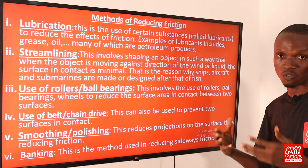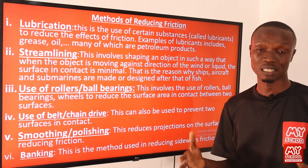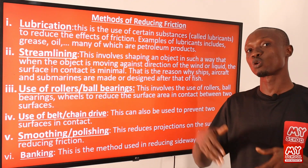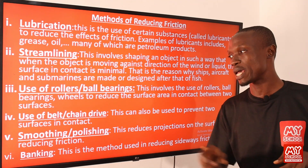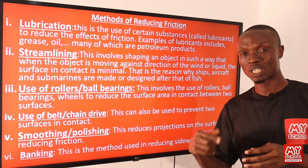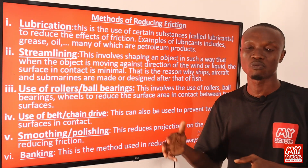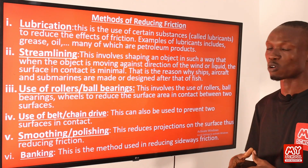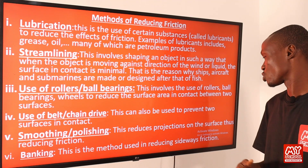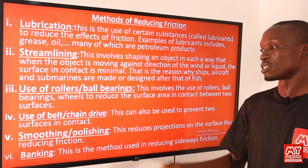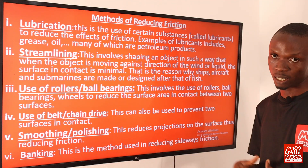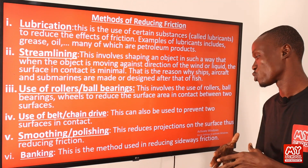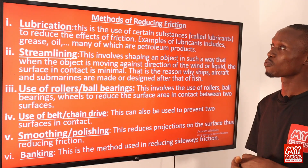The fourth method is the use of belt and chain drives, which prevent two surfaces from being in direct contact — as seen in cassava or tomato grinding engines, where a belt connects the motor shaft to the grinder. Fifth is smoothing and polishing surfaces, since smoother surfaces produce less friction. Sixth is banking, which is used to reduce sideways friction — this will be discussed in detail in subsequent slides.